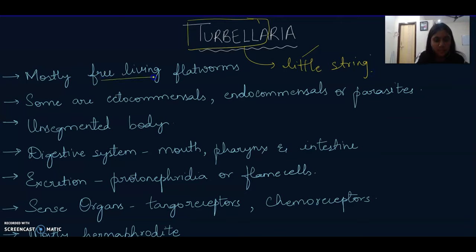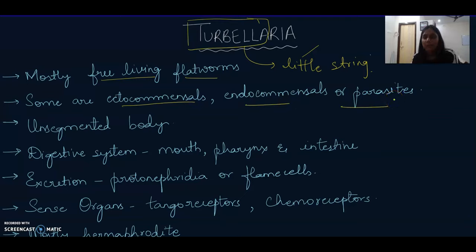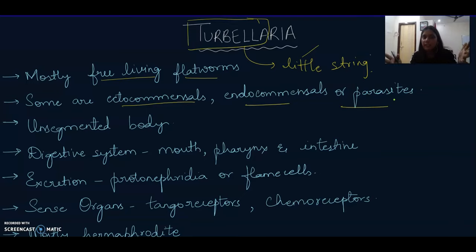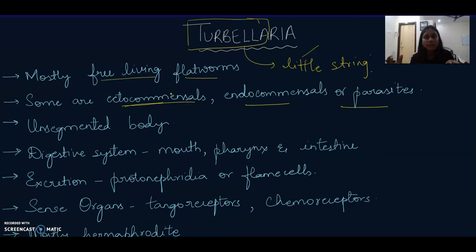These organisms are mostly free-living flatworms; some are ectocommensals and endocommensals, or parasites. To understand ectocommensals and endocommensals, you must know what commensalism is. Commensalism is an association between 2 organisms where one organism benefits and the other neither benefits nor loses. Ectocommensals means the organism lives on the surface of the host's body, while endocommensals means inside the body.